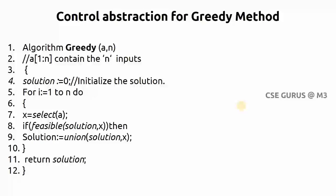Now, this is control abstraction for the greedy method. If you see here, how this procedure will follow, we can say it's a general method. Algorithm greedy method, here you can see A is an array consisting of n number of inputs.